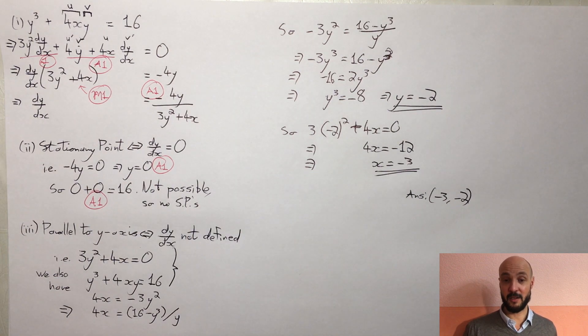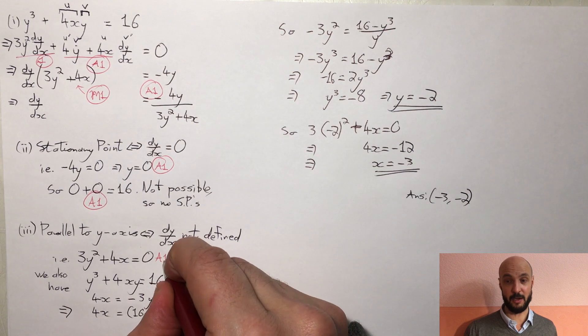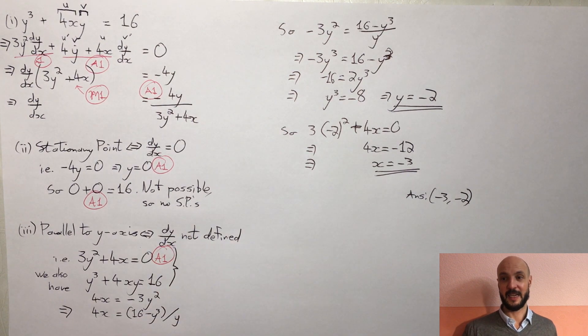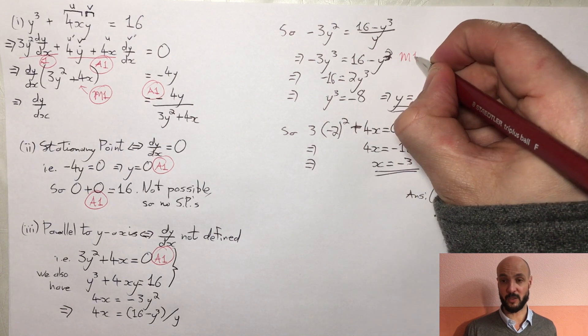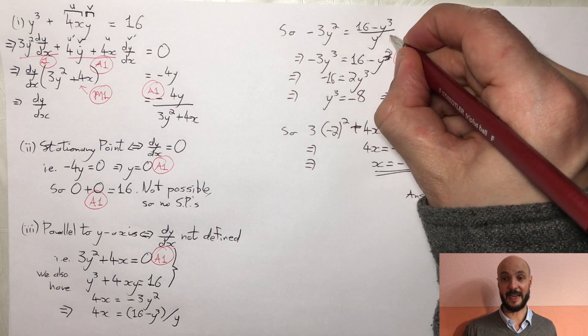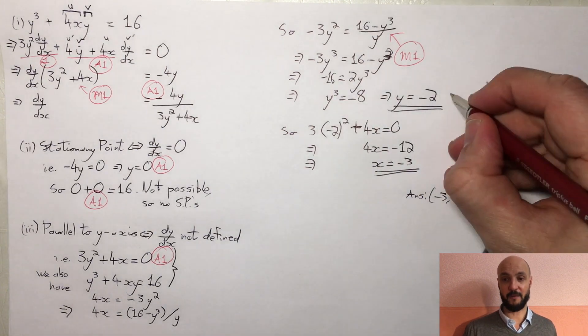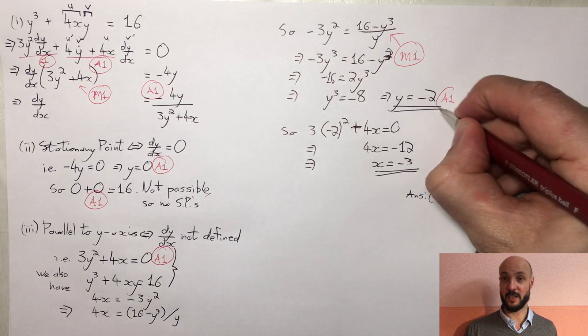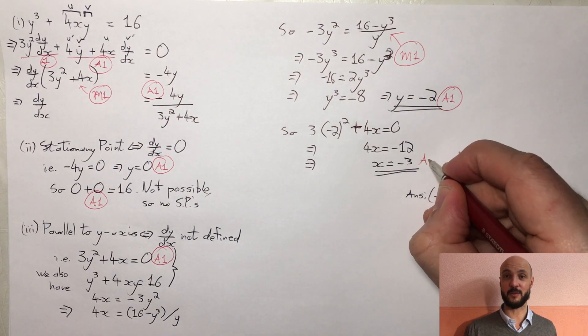And then the third part of the question we got one mark for showing that we want 3y squared plus 4x equals 0, a second method mark for eliminating one variable so getting an equation with just y as we did or just x, then an accuracy mark for finding y equals minus 2 and another accuracy mark for finding x equals minus 3.